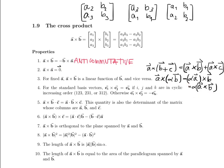For the standard basis vectors, E sub i crossed with E sub j equals E sub k if i, j, and k are in cyclic increasing order — for example, 1,2,3 or 2,3,1 or 3,1,2. Otherwise, if they're out of order, E sub i crossed with E sub j will give you negative E sub k.